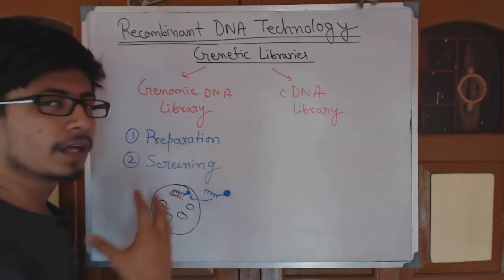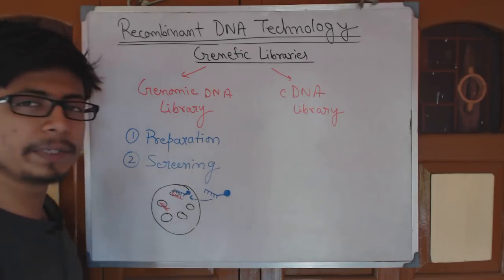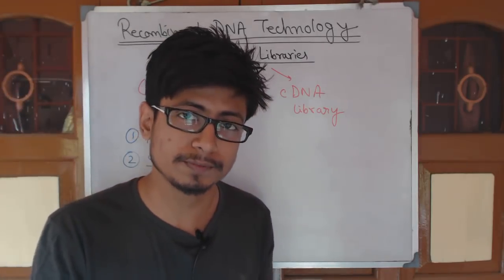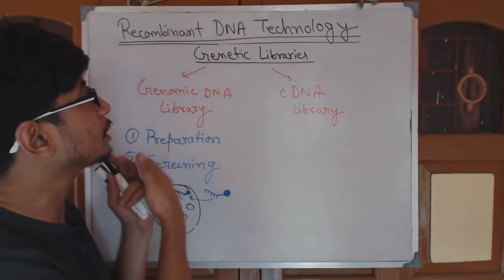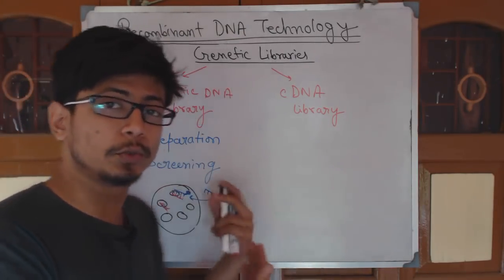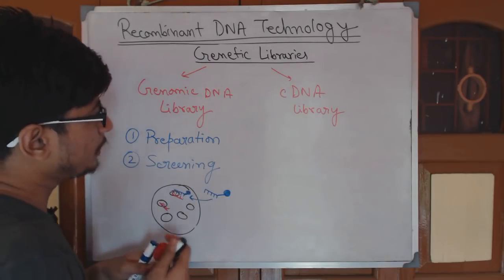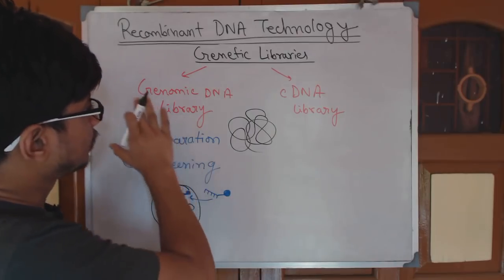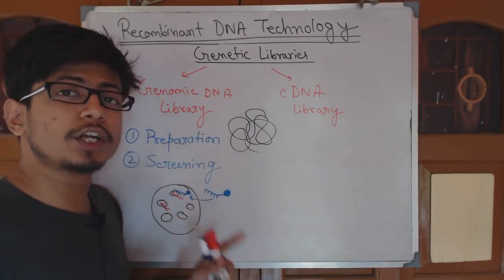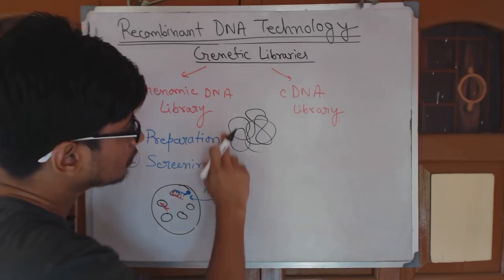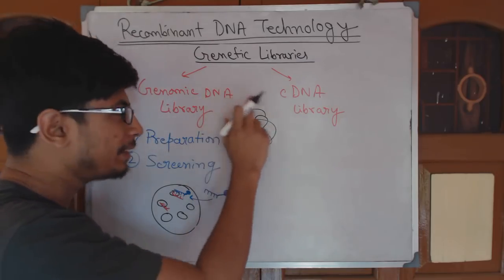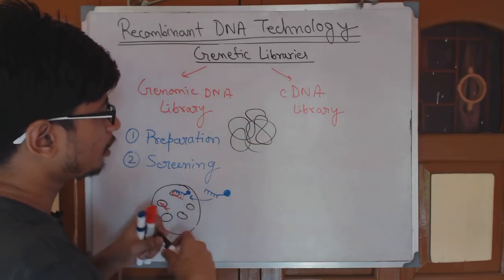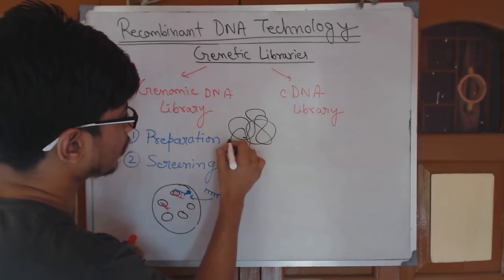This is the idea of genomic DNA library and how you prepare it. We prepare genomic DNA library with the cloning approach — we need molecular recombinant DNA technology to do that. Genomic DNA library means the representation of all the genes that an organism has. So whatever chromosomal element is present, whatever genomic DNA is present, we will fragmentize it into small fractions, breaking it down into small pieces.